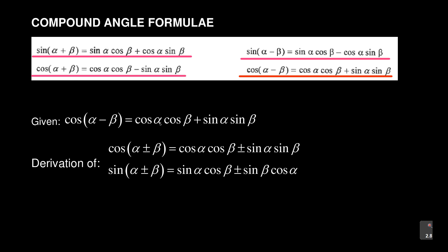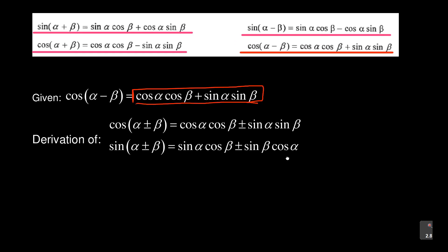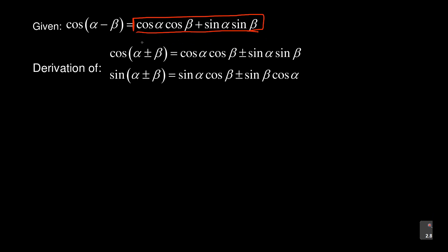They'll say: 'Given that cos(α − β) = cos α cos β + sin α sin β, derive the rest.' So using what they've given you, you must find the remaining formulas. Let's quickly do that — this is the main part: understanding where these formulas come from. So let's start with the first one: cos(α + β).